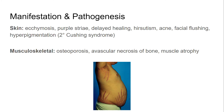Now let's talk about the manifestations and pathogenesis. Cortisol has a systemic effect, so we can expect to see symptoms of Cushing syndrome in many places. Starting with the skin: we may see ecchymosis, purple striae (also known as stretch marks), and delayed healing. These can all be explained by cortisol's effect on fibroblasts — cortisol inhibits fibroblast action, decreasing collagen production. Collagen is the main structural protein in the skin and vessels, so decreased collagen weakens structural integrity, causing ecchymosis due to blood leaking from vessels, and purple striae due to weakening of the skin.